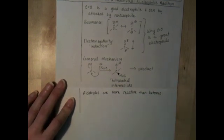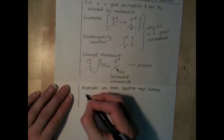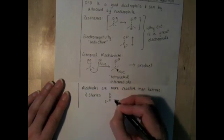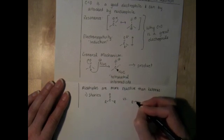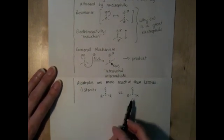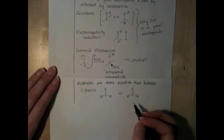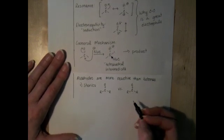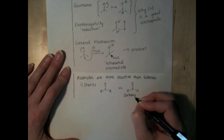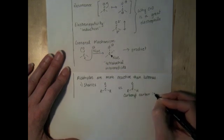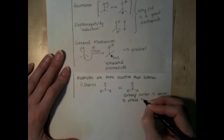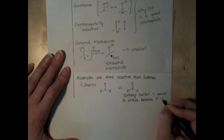And there are two explanations for why aldehydes are more reactive than ketones. The first one is sterics, because ketones have two alkyl groups and aldehydes only have one. It's easier for the nucleophile to make its way into the carbonyl carbon of an aldehyde just because there's less alkyl groups in the way. And so the carbonyl carbon is more accessible to the nucleophile, and that means that it takes less energy and the aldehydes are going to react more quickly than a ketone. So the carbonyl carbon is easier to attack because it is less crowded.